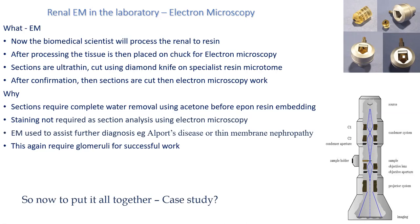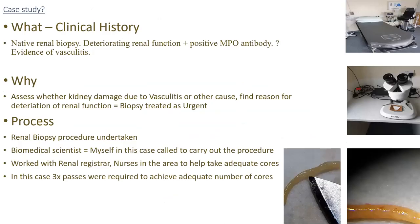So the case study — the clinical history of the patient was a native renal biopsy to be carried out. The patient had deteriorating renal function and positive MPO antibody, querying evidence of vasculitis. Deteriorating renal function meant this case was treated as urgent when taken up to the pathologist. They were assessing whether kidney damage was due to vasculitis or another cause and to find the reason for the deterioration of renal function.